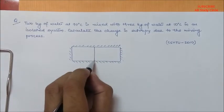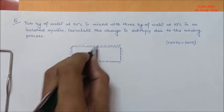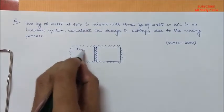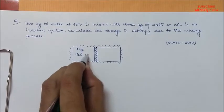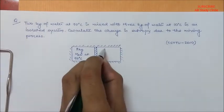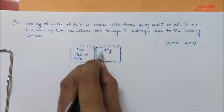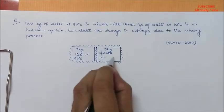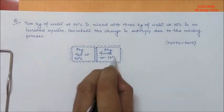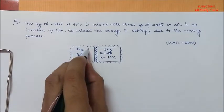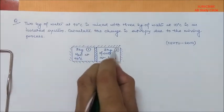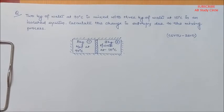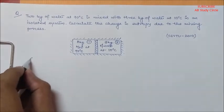Now, see, this is the barrier which separates 2 kg of water at 90 degree Celsius and 3 kg of water at 10 degree Celsius. Suppose this is your body 1 and this is your body 2.